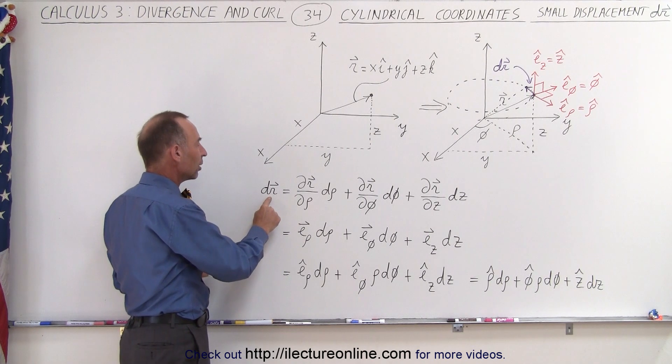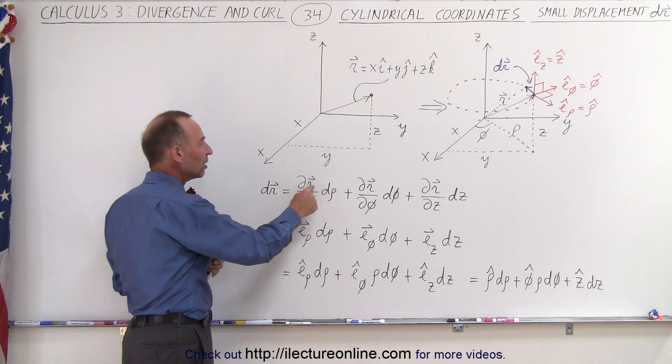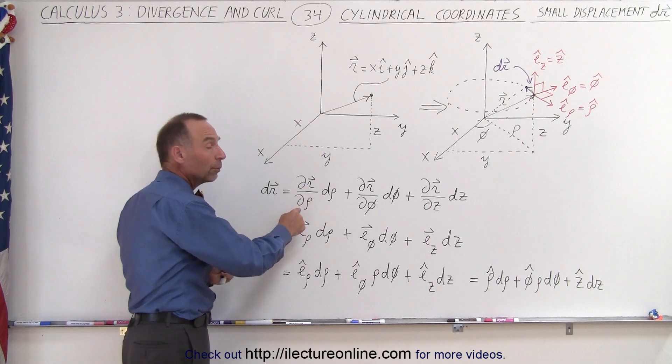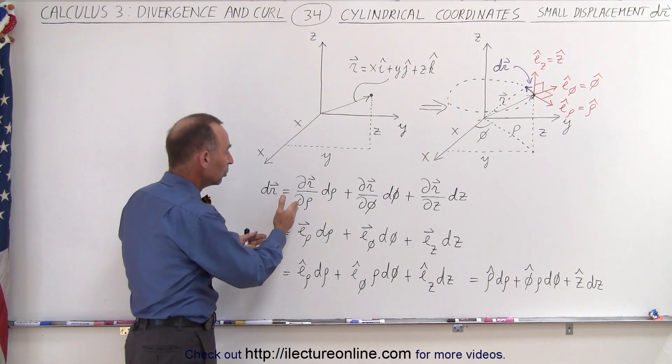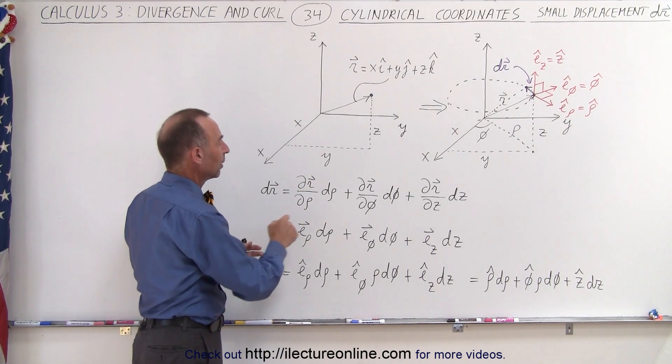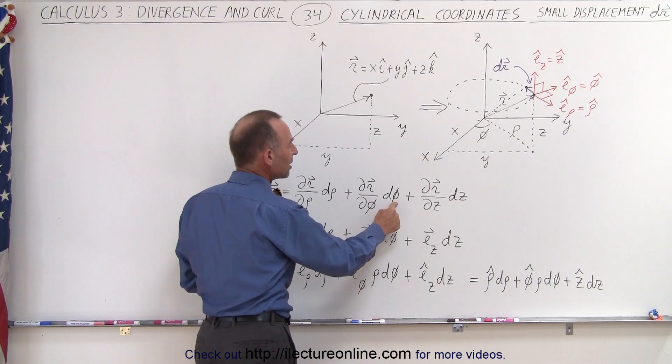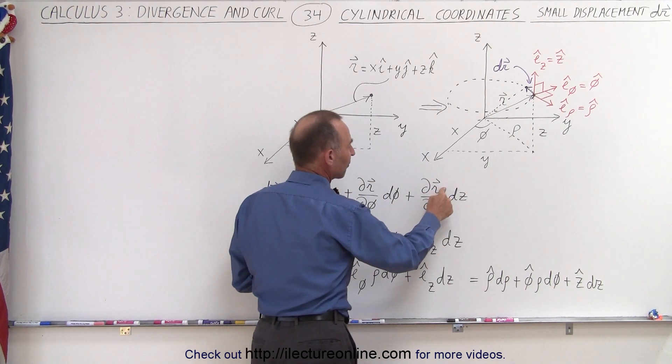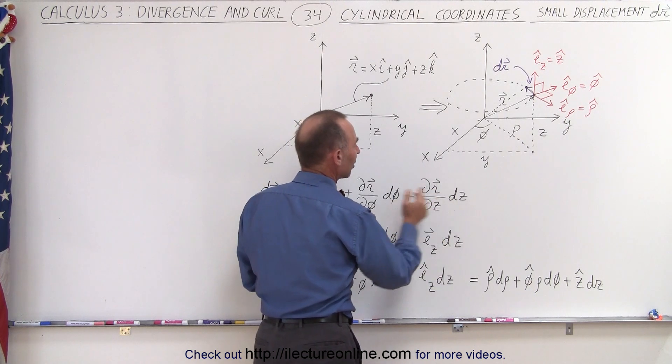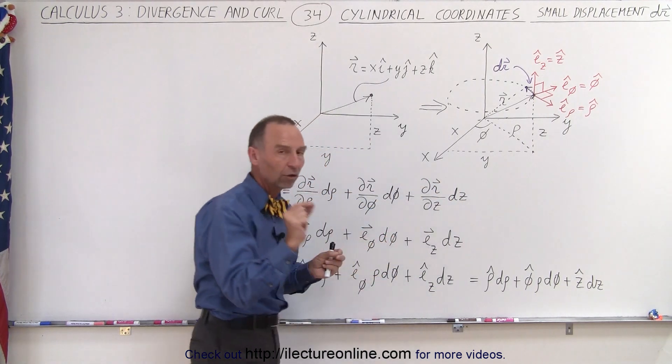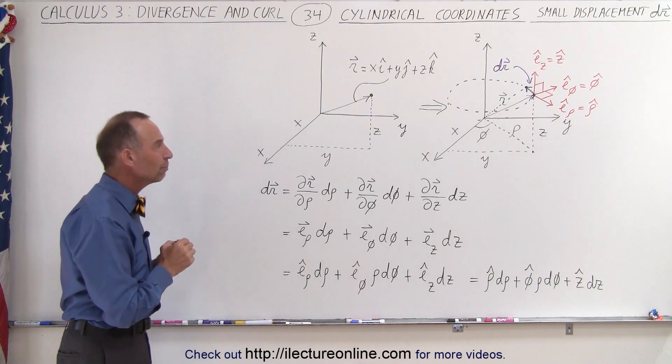What we're going to do here is express dr as the change in the position vector with respect to rho times d rho, plus the change in the position vector with respect to phi times d phi, plus the change in the position vector with respect to z times dz. So this is how we can express a small change in the position vector.